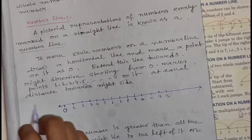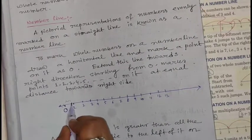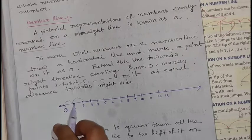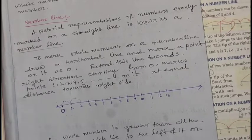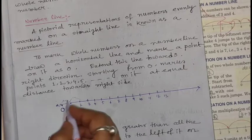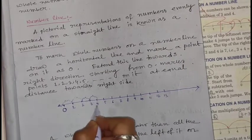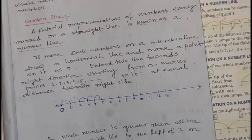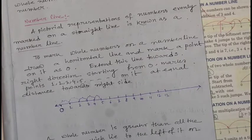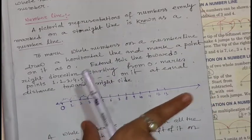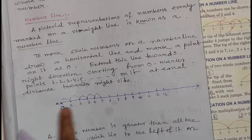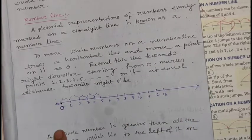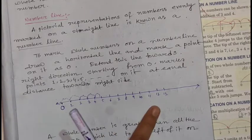You can see that the distance between any two consecutive points on the number line is equal. This equal spacing is maintained throughout. This pictorial representation is called a number line.